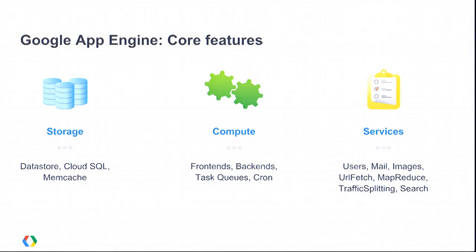App Engine is more than just scaling in a fully managed environment. You get a great set of core features that help you build a real feature-rich application quickly. There are several storage options baked in: you can use the App Engine Datastore, which is a NoSQL data store, without any configuration, and you can also use Google Cloud SQL — they started taking open signups yesterday. You also have great compute options like task queues and cron jobs — you don't have to configure or manage those yourself. And App Engine has great APIs and services included, like the Users API for authenticating Google users, as well as MapReduce, Search, and Mail.